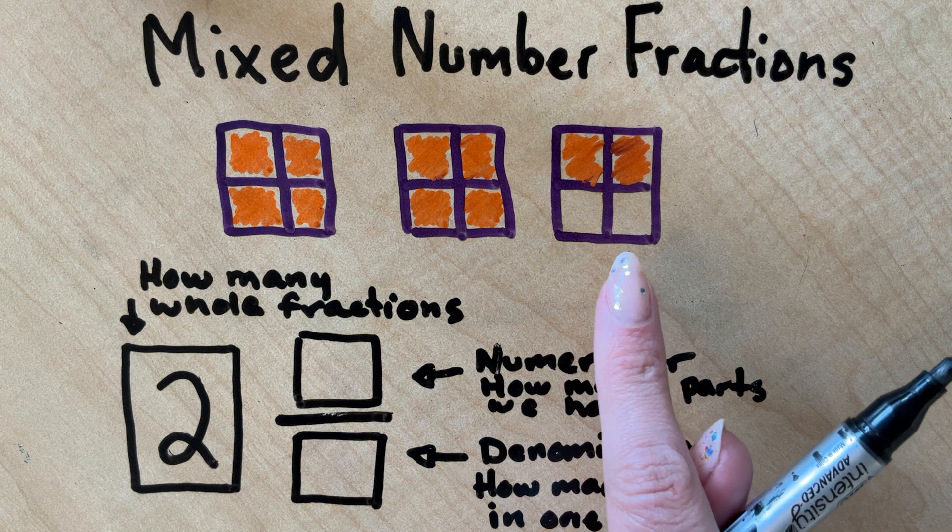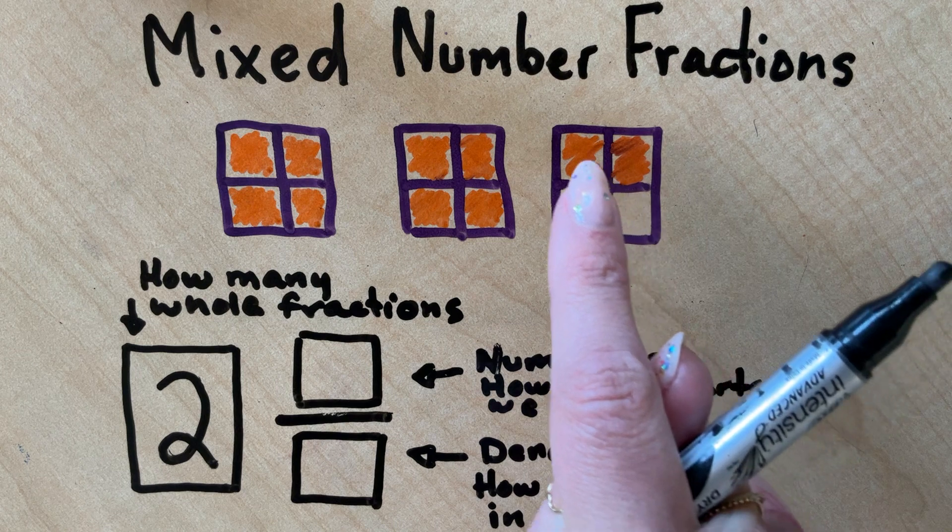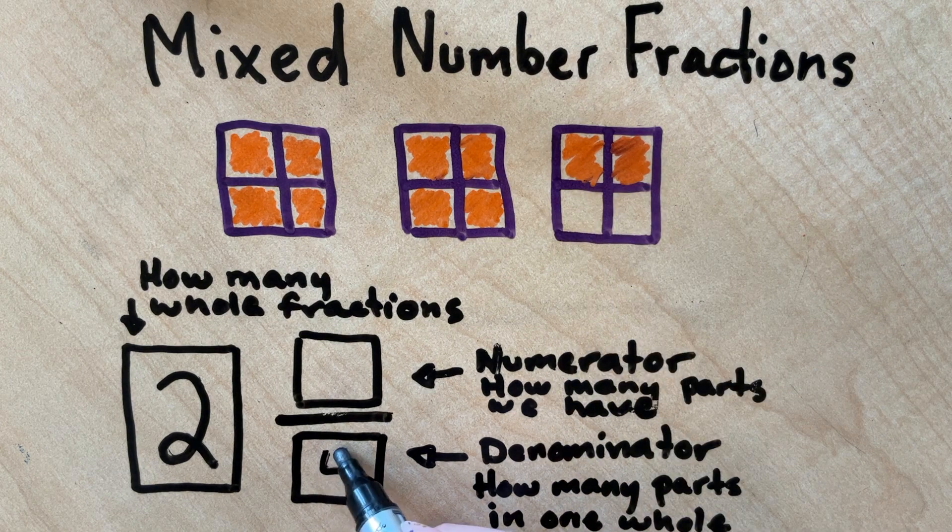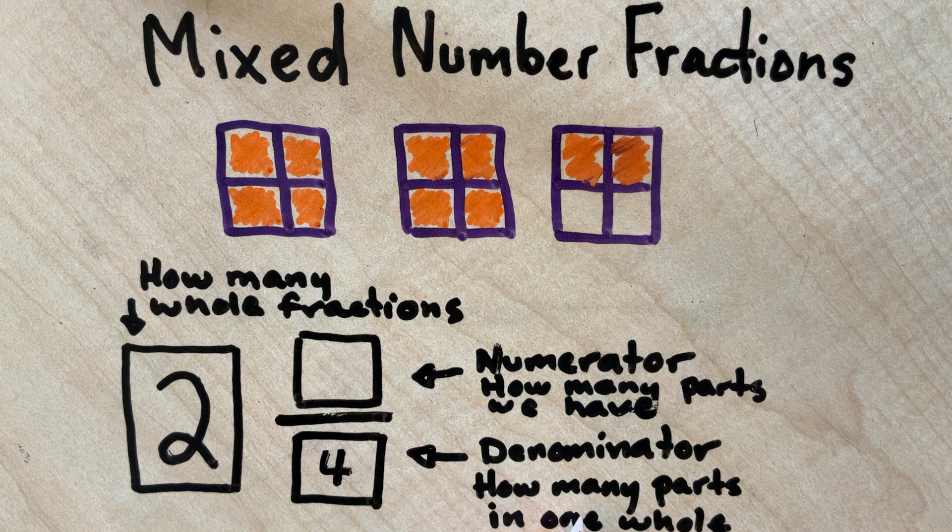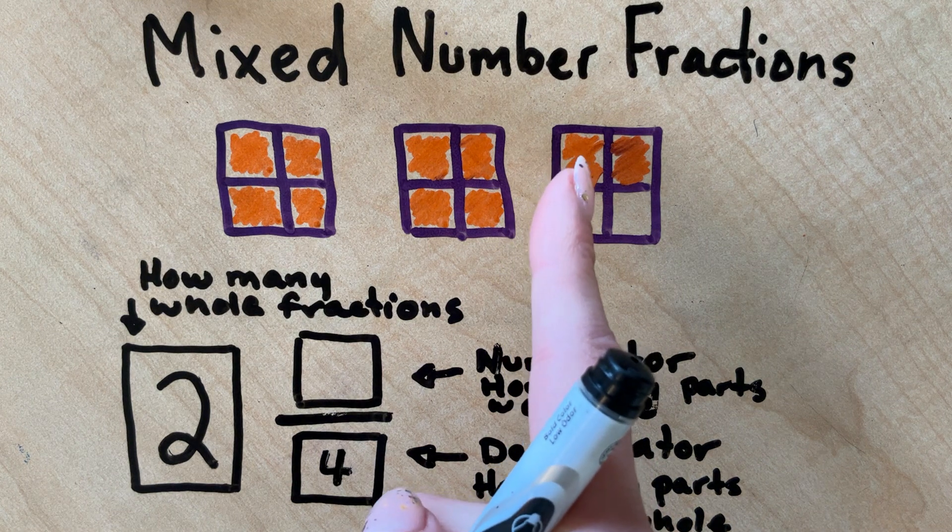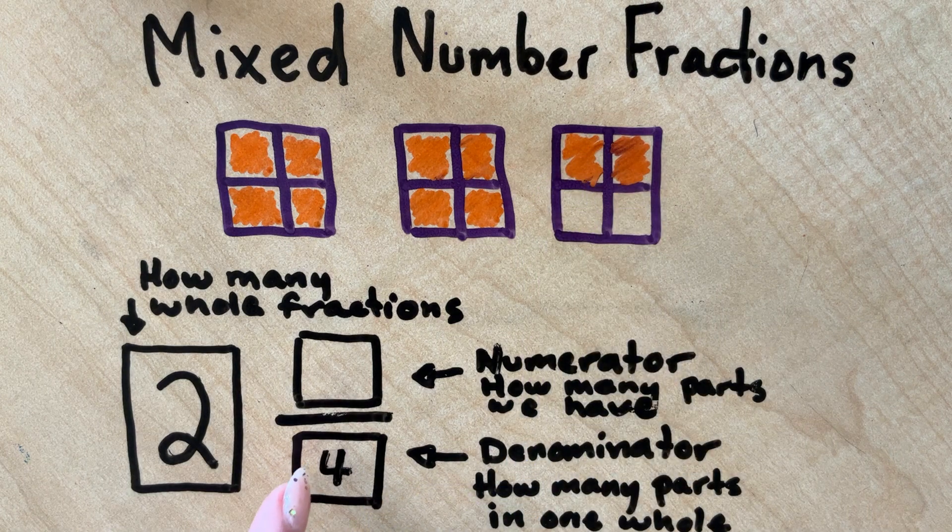Now we're going to come back over here and we're going to look at this whole. I have one, two, three, four pieces. So I'm going to write a four as my denominator. That is always how many pieces are in my whole. So I can easily find that by going one, two, three, four. Boom. That's my denominator.